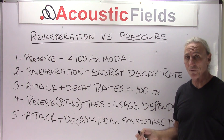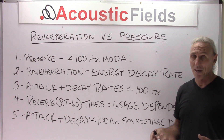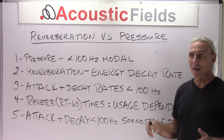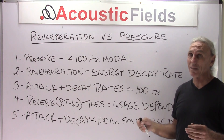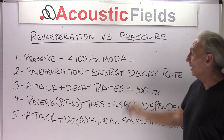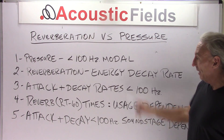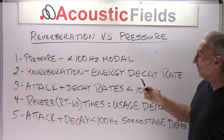Above 100 cycles requires a lot less square footage coverage, a lot less density, a lot less mass to treat those issues. So that's how we define unwanted pressure issues.